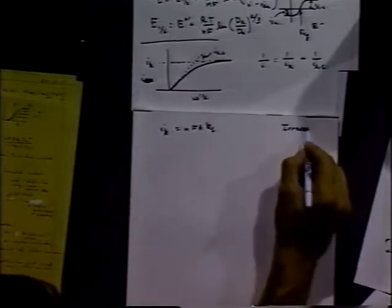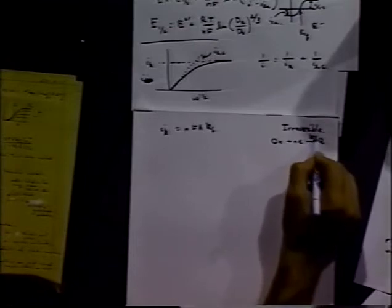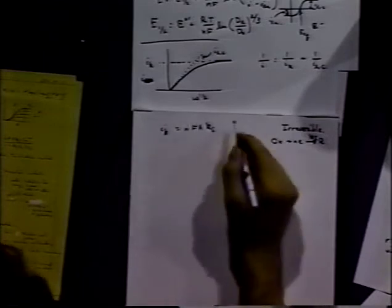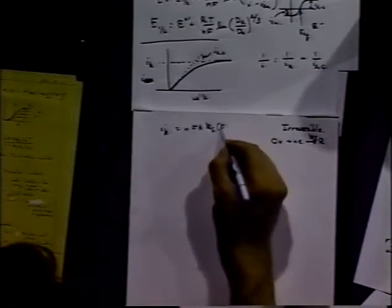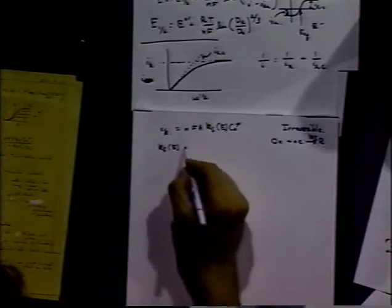Again, where O plus e only goes to R with some forward rate constant, not allowing for a back rate constant. We have a function K sub F that depends on... times the bulk concentration. And KF as a function of E would be the Butler-Volmer relationship for metallic electrodes.